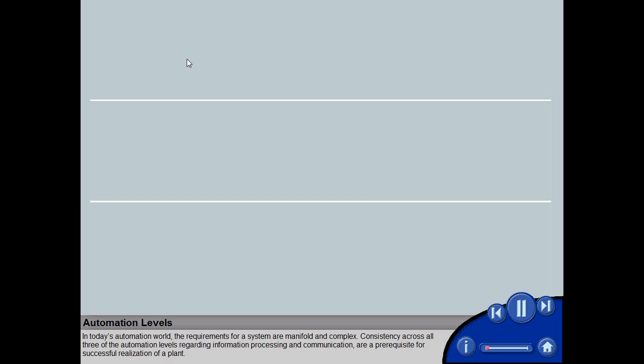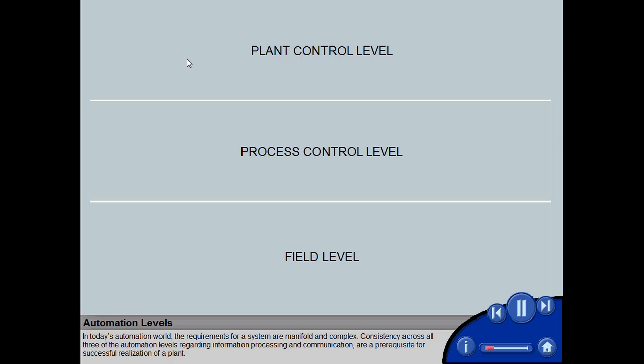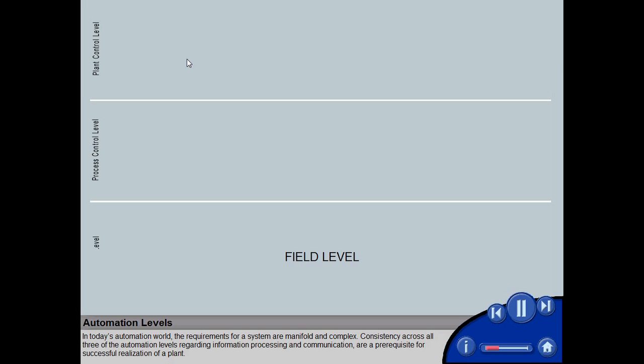In today's automation world, the requirements for a system are manifold and complex. Consistency across all three of the automation levels regarding information processing and communication are a prerequisite for successful realization of a plant.